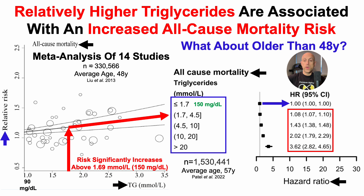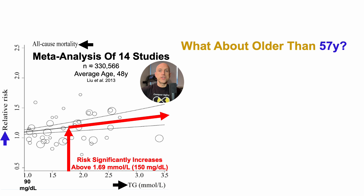We know that each of these quintiles is significantly associated with all-cause mortality risk because the 95% confidence interval, or 95% CI — the data in parentheses — is completely above 1 for each of these quintiles.